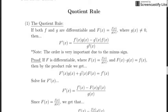Today we're going to take a look at the quotient rule. In another lesson, we looked at the product rule — how we take the derivative when we've got two functions multiplied together. Now we're going to take a look at the quotient rule: what happens when we take the derivative of the quotient of two functions?